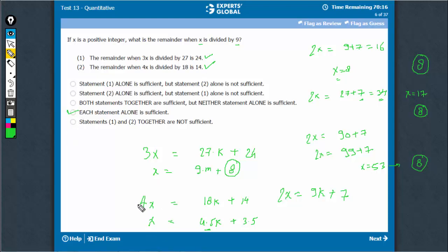One may just think that this was not sufficient because 4x was given, x is equal to 4.5k plus 3.5k, you don't have a 9k here, but when you look practically, we know that x has to be an integer, but k does not have to be an integer.